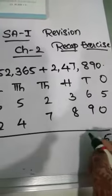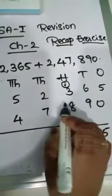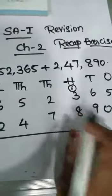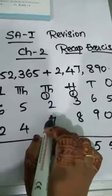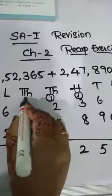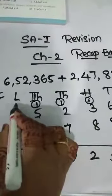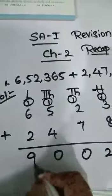5 plus 0 is 5. 9 plus 6 is 15, so 5 here, 1 carry here. 8 plus 3 is 11, 11 plus 1 is 12, so 2 here, 1 carry here. So 7 plus 2 is 9 plus 1 is 10, 0, again 1 carry here. 5 plus 4 is 9 plus 1 is 10, 0, again 1 carry here. 6 plus 2 is 8 plus 1 is 9. I have explained orally and I have explained practically.